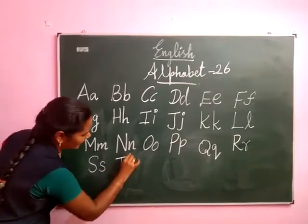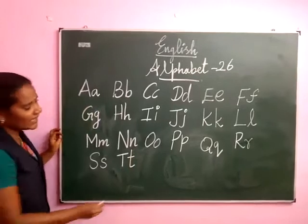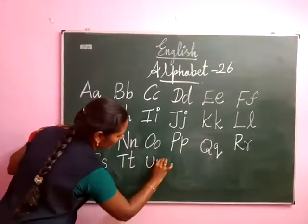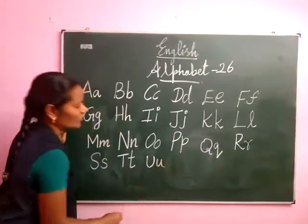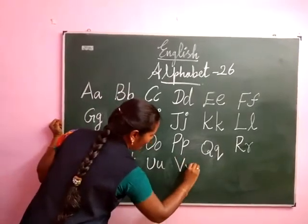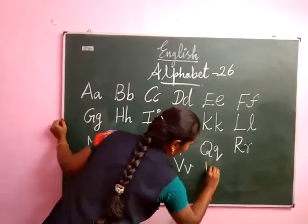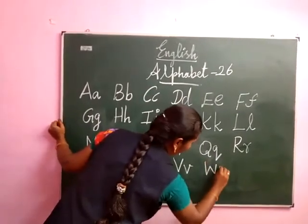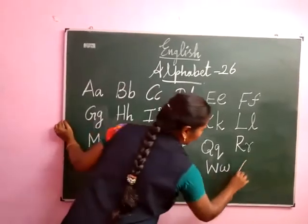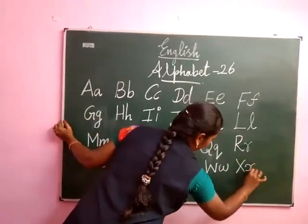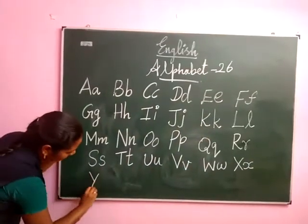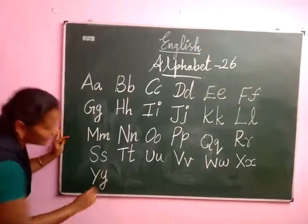Next, capital T, small t. Next, capital U, small u. Next, capital V, small v. Next, capital W, small w. Next, capital X, small x. Next, capital Y, small y.